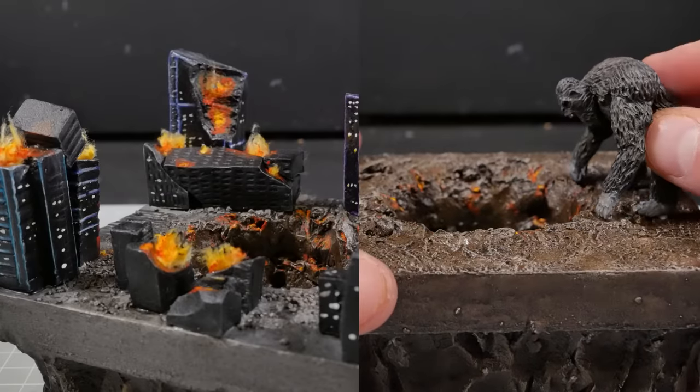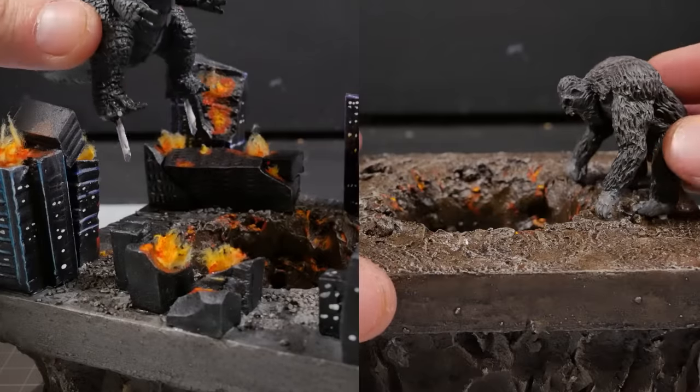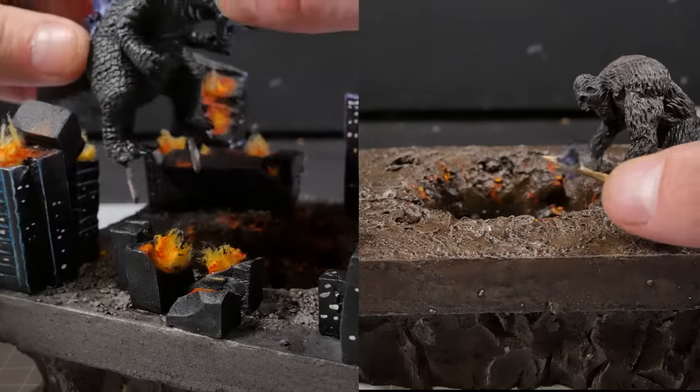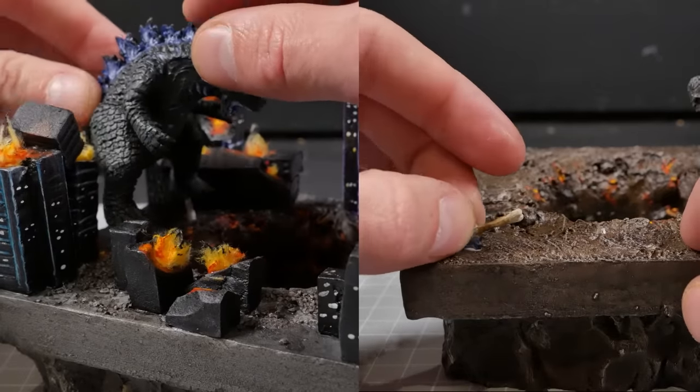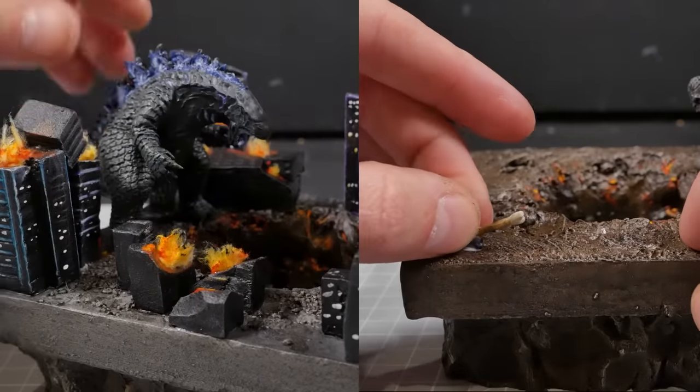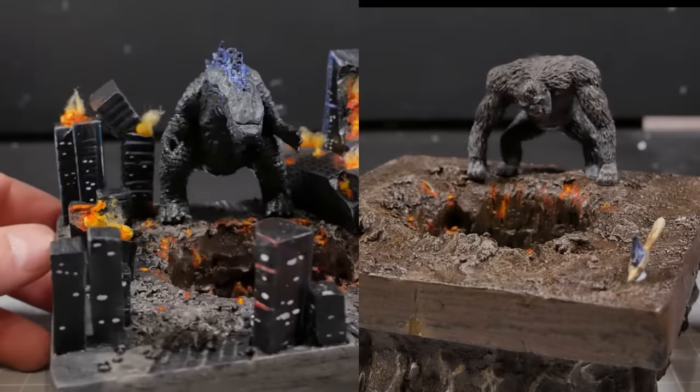Now the absolute final stage is staging our monsters on their respective bases and I also made a tiny axe for Kong since Hollow Earth was a tad too drab at this point. But otherwise we are all done and on to our glamour shots!